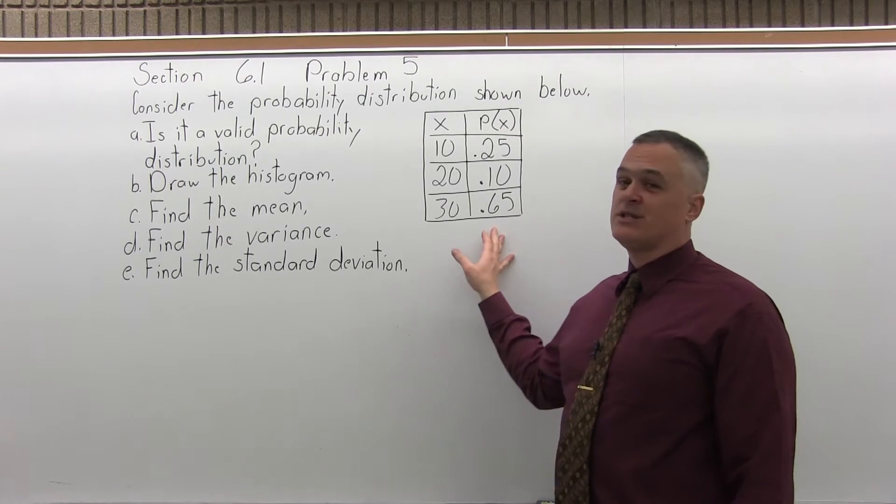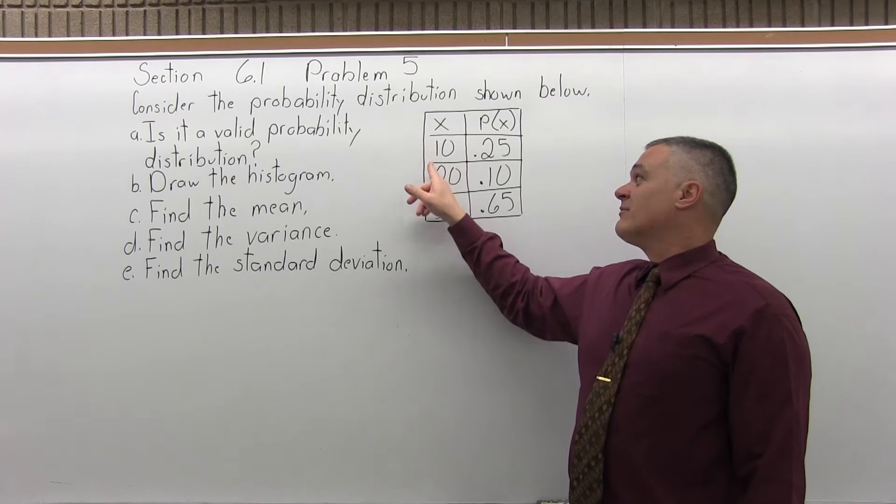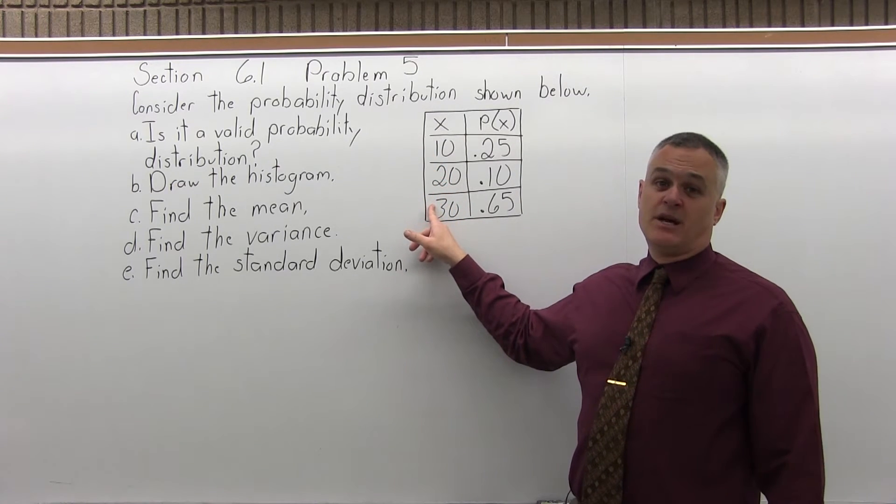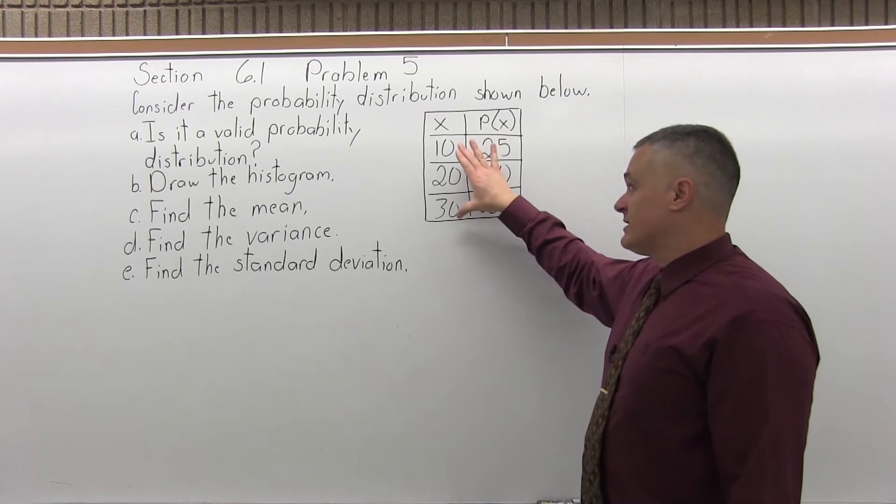To be a valid probability distribution, you have to satisfy three requirements. The first requirement being that every value in the first column is a number, as opposed to a color or a letter or something. So that's good.